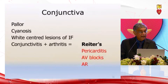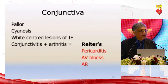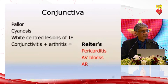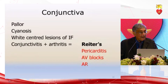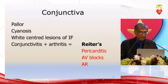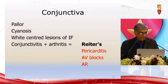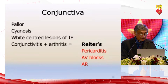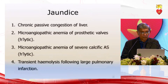Remember that conjunctivitis with associated arthritis is Reiter's syndrome, and Reiter's syndrome is associated with a host of cardiovascular complications: pericarditis, AV blocks, and aortic regurgitation. So you look at the conjunctiva, and arthritis is an associated feature that you have to look for.